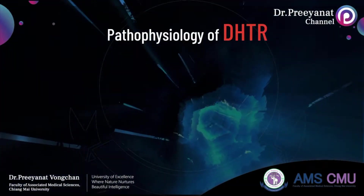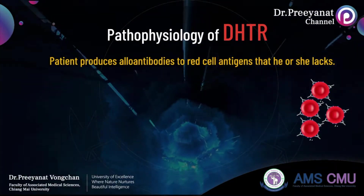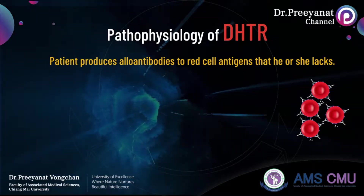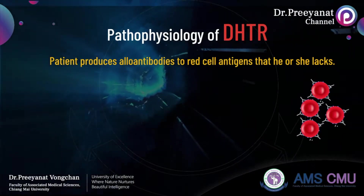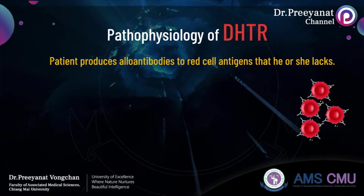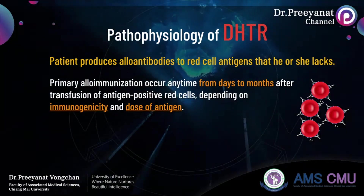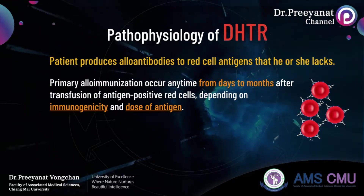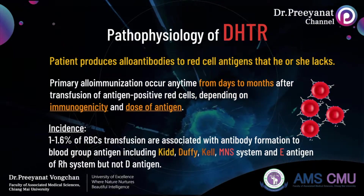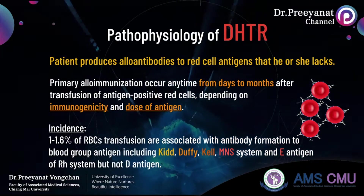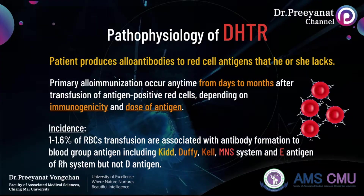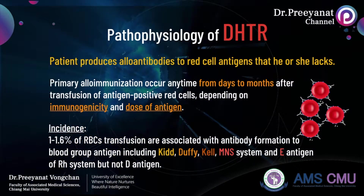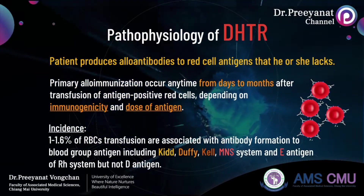After transfusions, pregnancies, or transplantation, patients may produce alloantibodies specific to red blood cell antigens that they lack. These antibodies may cause delayed hemolysis if patients again receive red blood cells expressing the corresponding antigens. Primary alloimmunization occurs anytime from days to months after transfusion of antigen-positive red blood cells, depending on immunogenicity and dose of antigens. About 1 to 1.6% of red blood cell transfusions are associated with antibody formation to antigens of blood group systems including Kidd, Duffy, Kell, MNS, and E antigen of the Rh system, excluding antigen D, because Rh-negative blood is selected for Rh-negative patients.